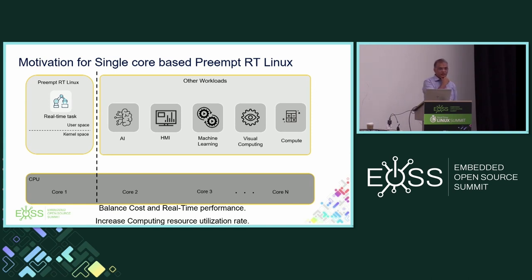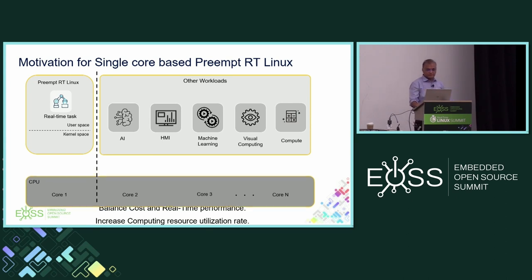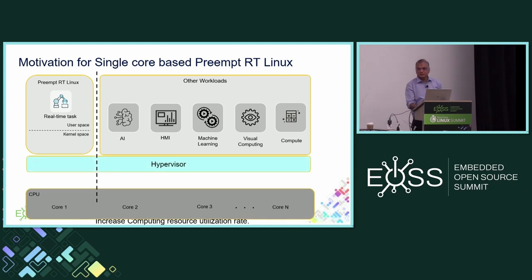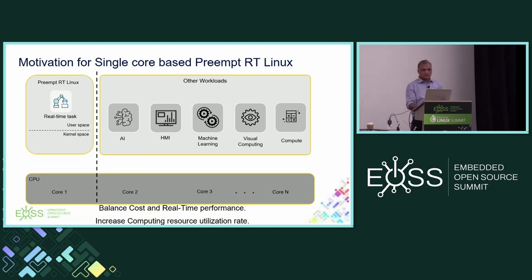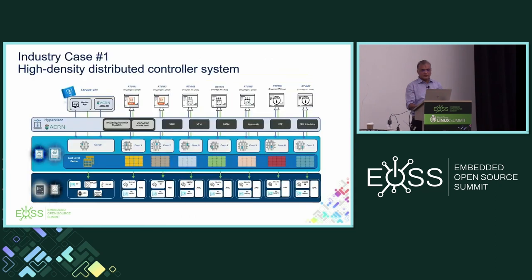We deliver these use cases off-the-shelf from the ECI product, which can run on a specific platform and then be extended to the customer's choice of platform. During Q&A, a question was raised: why use eight virtual machines instead of eight processes, given that standard preempt RT Linux with cgroups could still prioritize and pin containers?